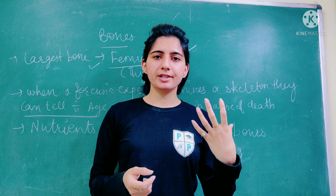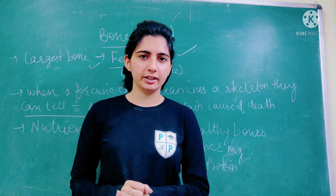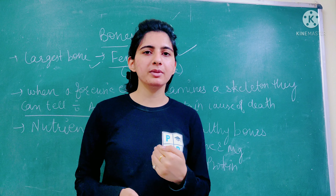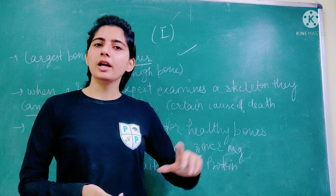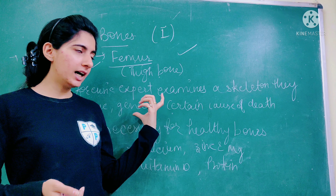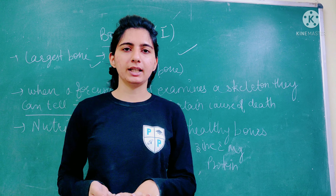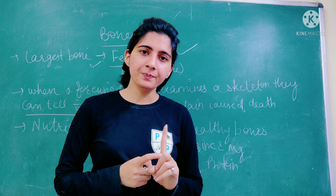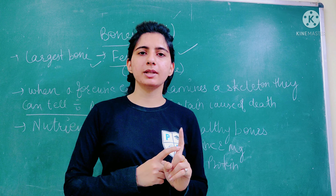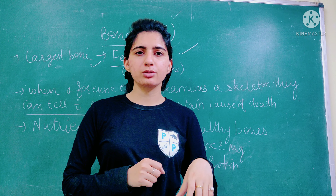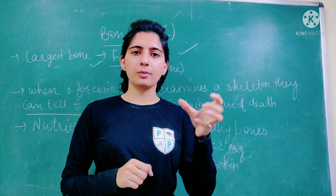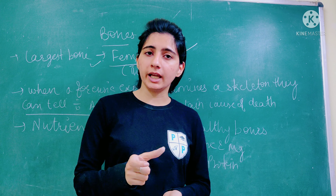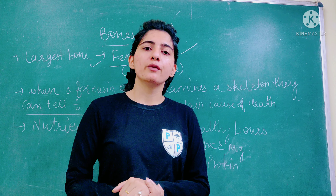When a forensic expert examines any skeleton or dead body, they can tell several things. The first thing they can determine is sex and gender — whether the person was male or female. The second thing they can tell is the age of the person. Just as I studied plants and told you how to determine the age by counting rings on a trunk, the same principle applies here.